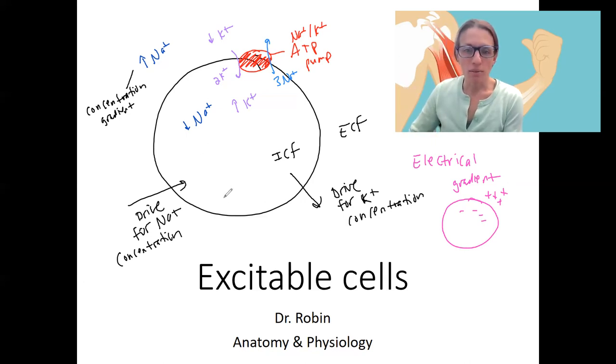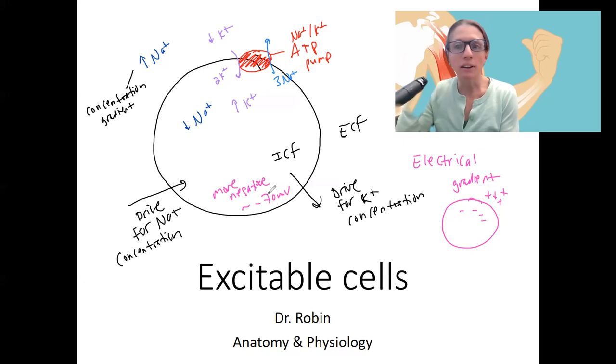So our concentration of negative ions inside the cell is greater. More negative. Typically about minus 70 millivolts. It does depend on the type of cell. Neurons and muscle cells both are fairly negative. So we'll use this as a reference point. So because of this minus 70, there is a drive for certain ions to move in or out based on that as well.